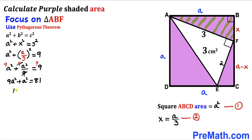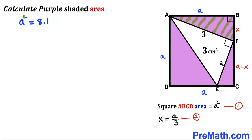We have 10a² = 81. Dividing both sides by 10, our a² value turns out to be 8.1.